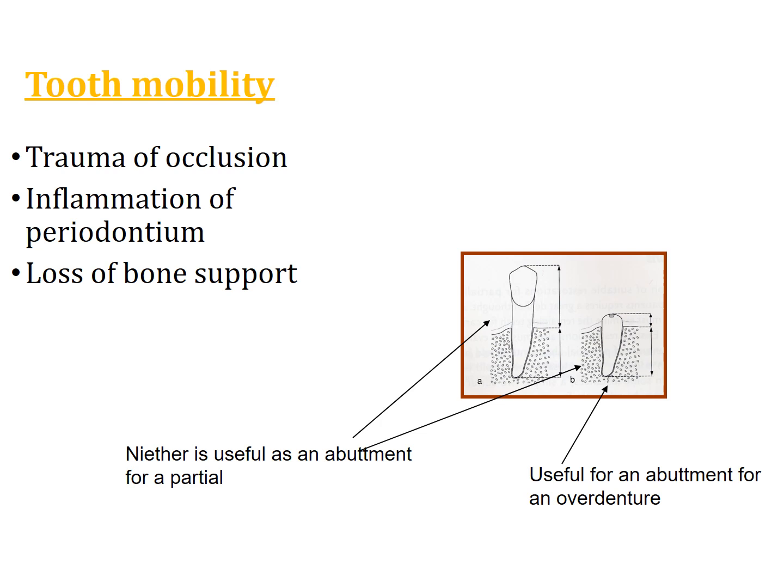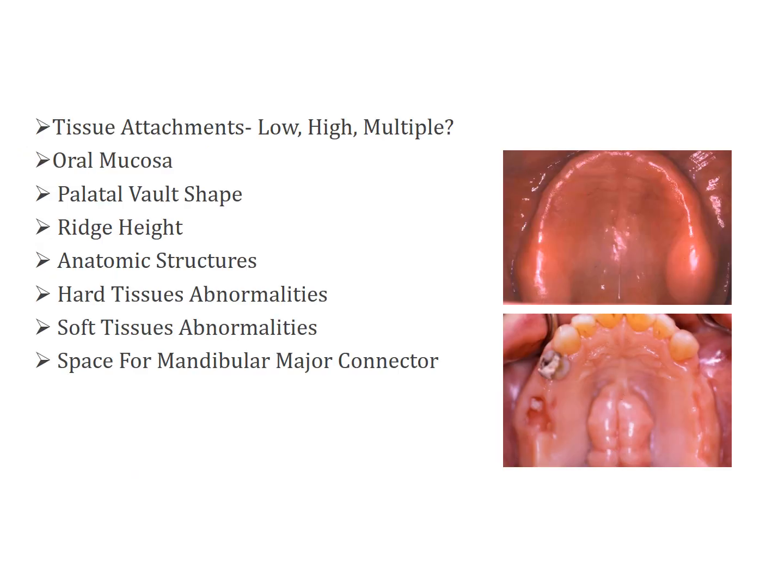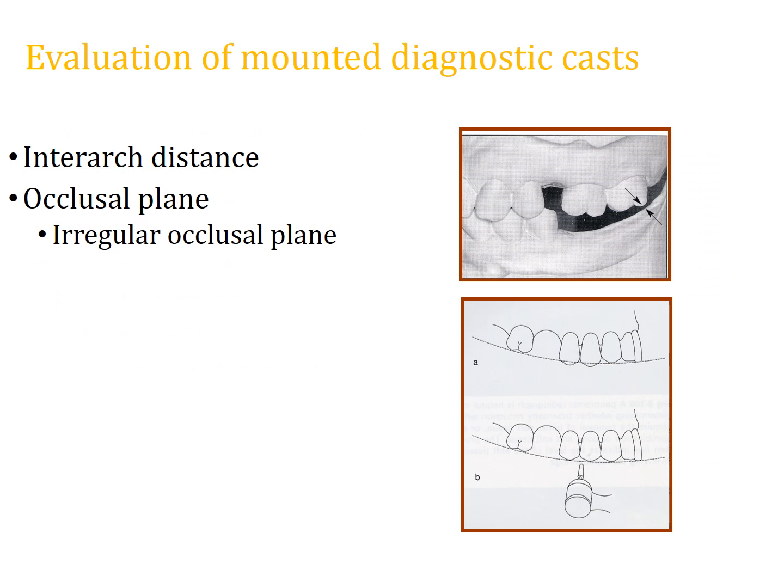A drop in occlusion can result in bone loss and inflammation, and this needs to be addressed. You have to check the tissue attachments — whether frenal attachment is high, medium, or low — and check the vestibule, shape of the residual ridge using House's classification (Class 1, 2, or 3), the relationship of the ridge with the soft tissue, and any anatomical structures like tori or exostoses, or soft tissue abnormalities like flabby ridges or knife-edge ridges.